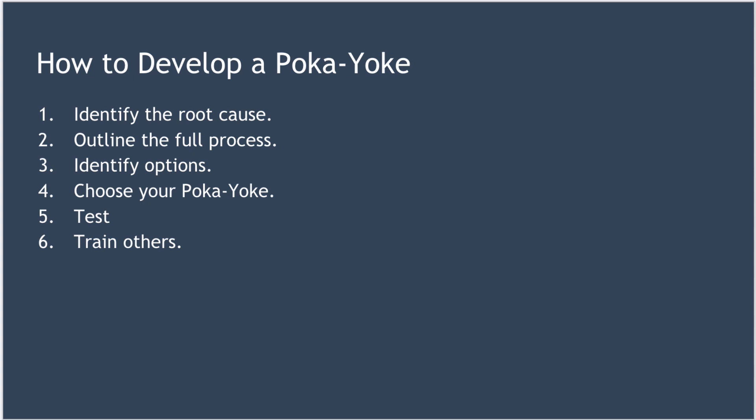Step three is to identify your options to remove the mistake using a control Poka-Yoke. If you can't figure out how to prevent the error, maybe you can detect it quickly using a warning Poka-Yoke. Look at using the contact, constant number, and sequence methods for each type. Step four is about choosing the Poka-Yoke — choose the best mechanism for your circumstances. Step five is about testing the Poka-Yoke you've created. And finally, if the test is successful, you need to train the people in your team who need to operate the new process with the Poka-Yoke.